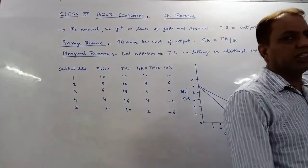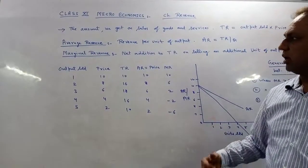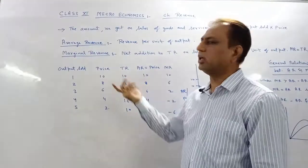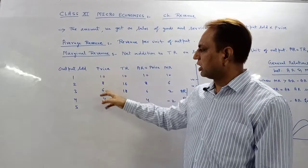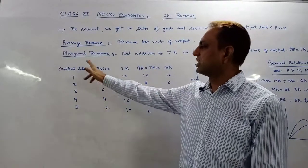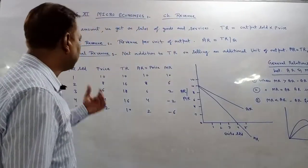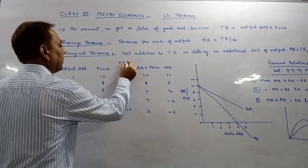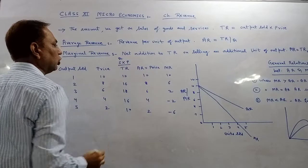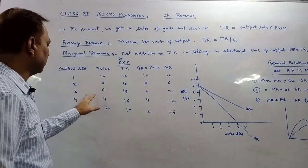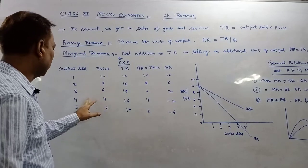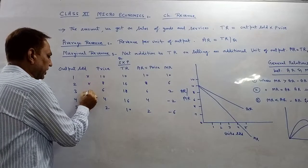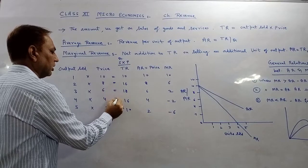Let us understand some basic things. Just as we had tables for TC, AC, MC, similarly there will be tables here too. We put output sold first: 1, 2, 3, 4, 5. And it all depends on price. As a normal market notion, we have been bringing price down: 10, 8, 6, 4, 2 — because sales are increasing, and sales increase when price goes down. So to calculate TR, we multiply quantity sold into price: 1×10=10, 2×8=16, 3×6=18, 4×4=16, 5×2=10.